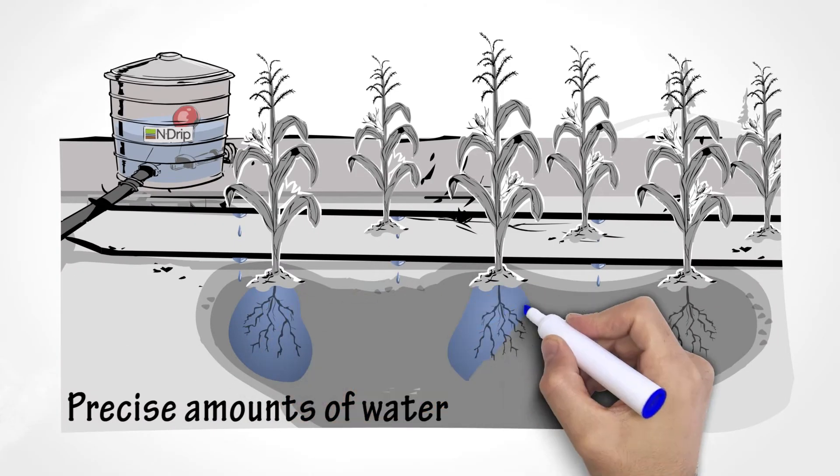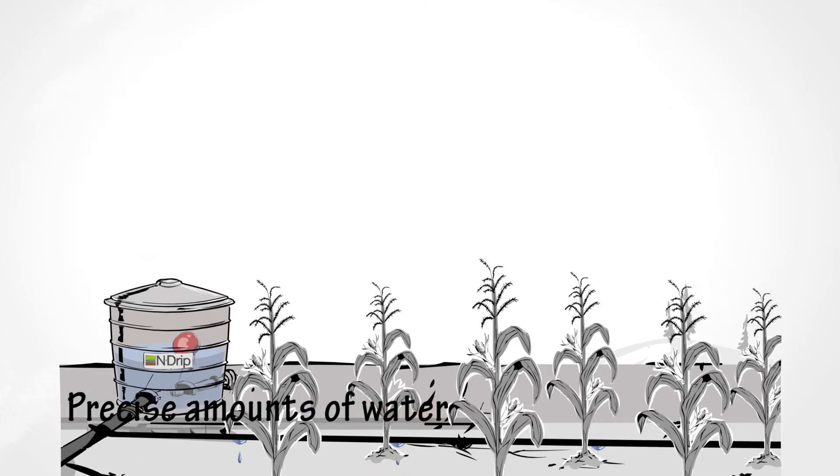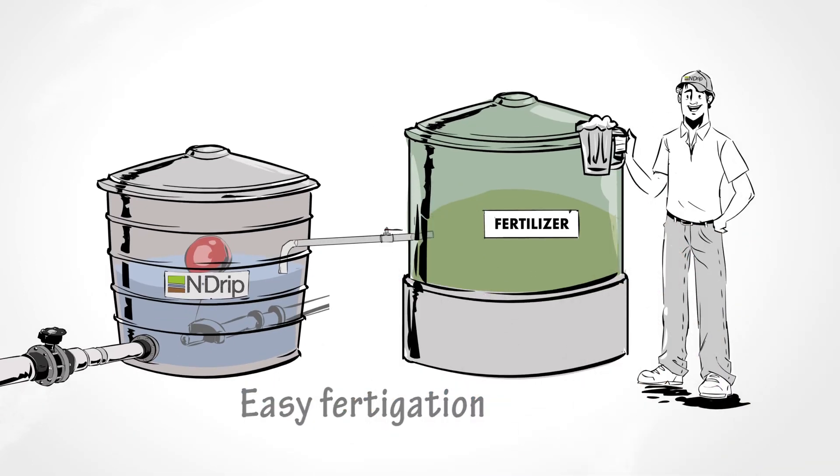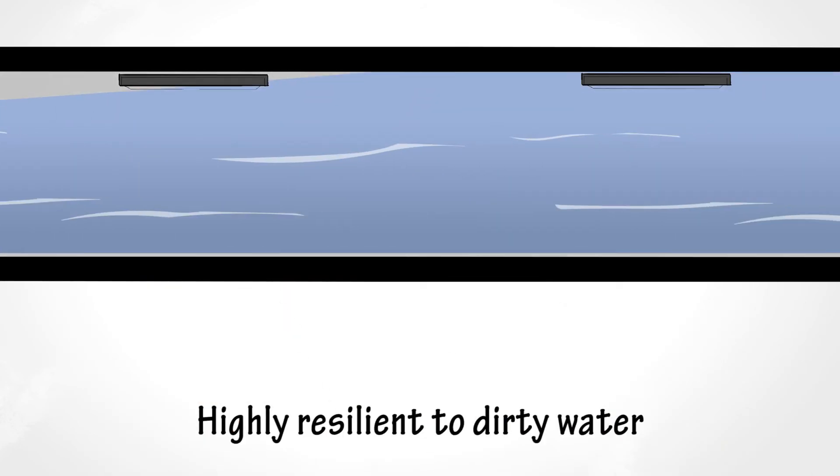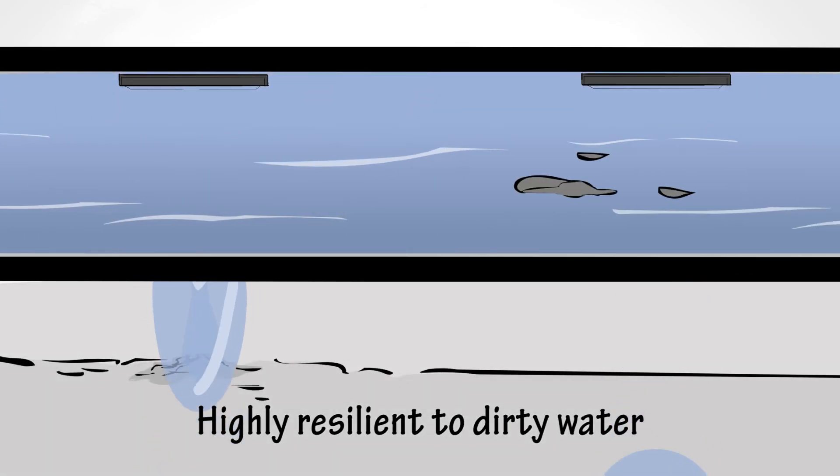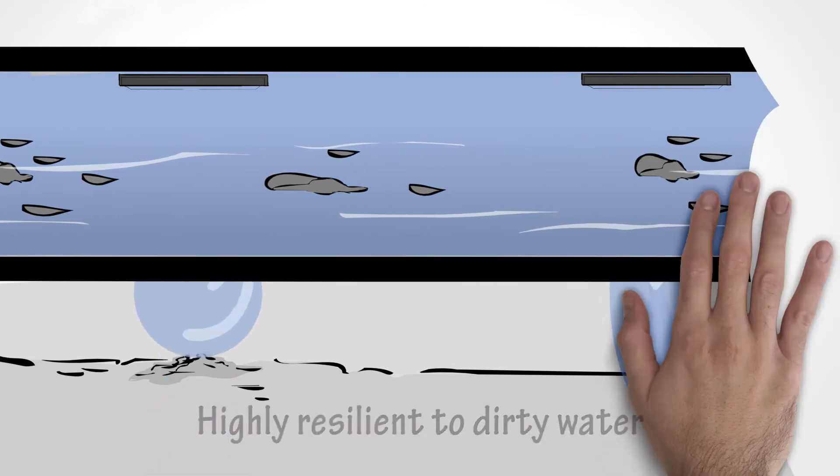Plants get precise amounts of water with just the right amount of fertilizer. Dirt won't cause clogging, as our innovative dripper design allows water to flow smoothly through, no matter what.